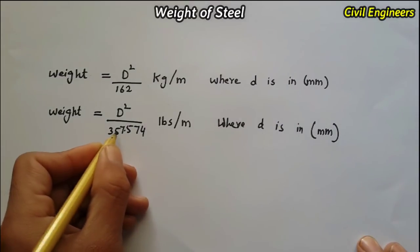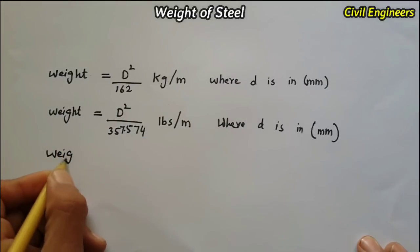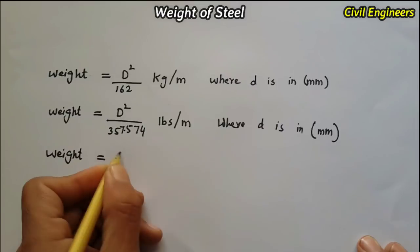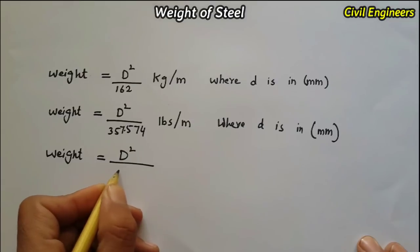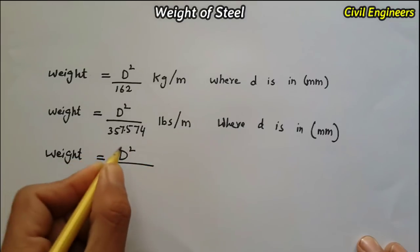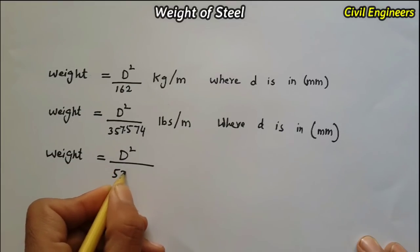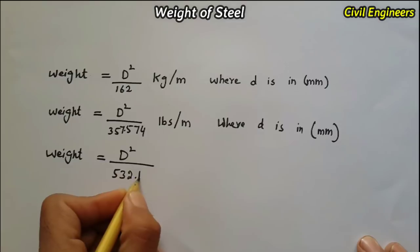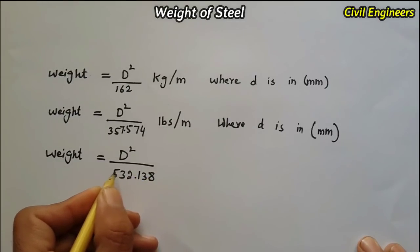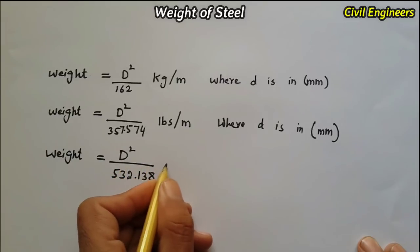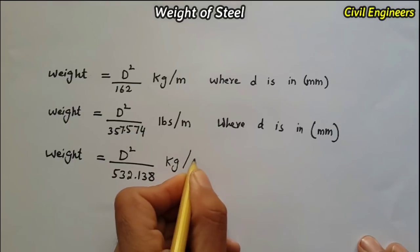To find the weight of steel in kg per feet, we use the formula: weight equals D squared divided by 532.138. This gives us the weight in kg per feet, where D is in mm.